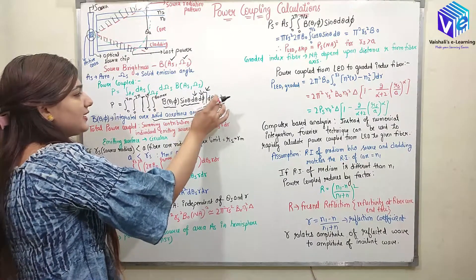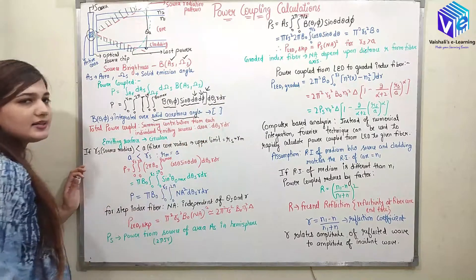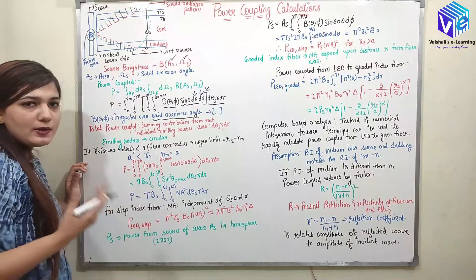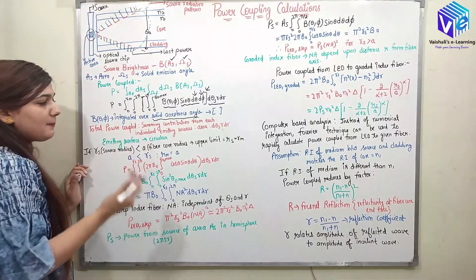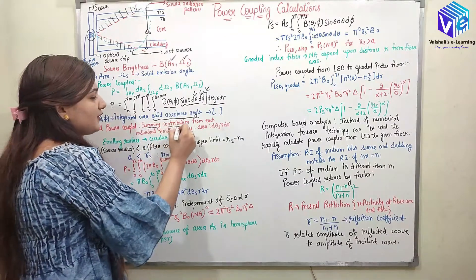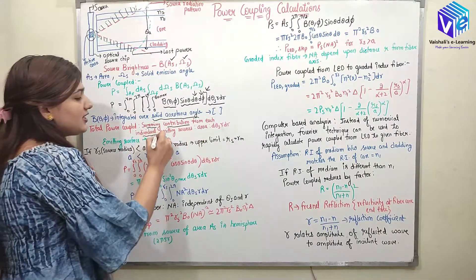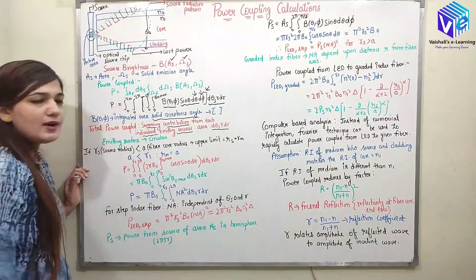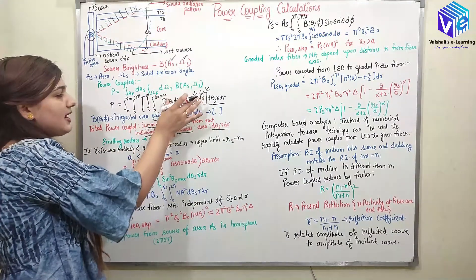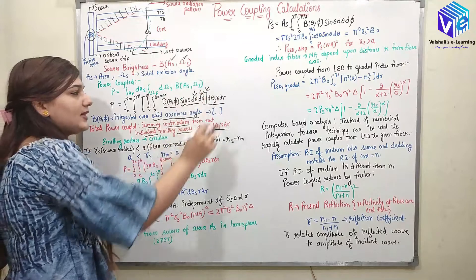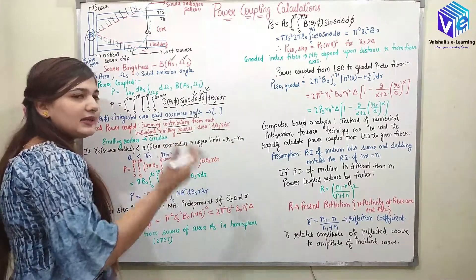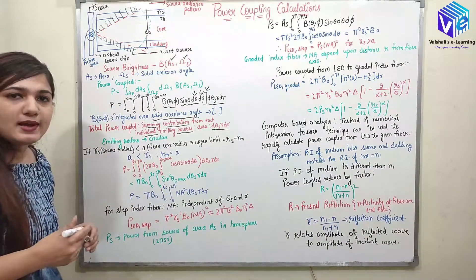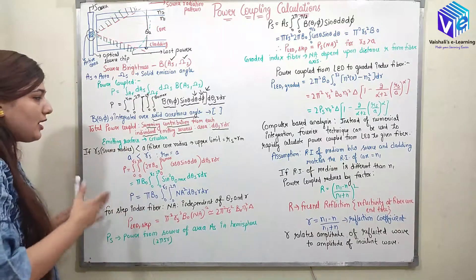R is changing from 0 to the maximum value of R. The total power coupled can be found by summing the contribution from each individual emitting source over each area element dθ_S and R·dR. First we integrate B(θ, φ) over the acceptance angle in θ and φ, and then over the full area dθ_S and R·dR. This is how we get the total power.